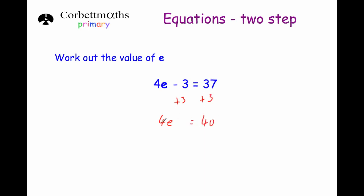Next we've got 4 times e. We don't want to times by 4, so we do the inverse and divide both sides of the equation by 4. 4e divided by 4 is just e, and 40 divided by 4 is equal to 10. So our answer is e equals 10. We can test it: 4 times 10 is 40, minus 3 is 37. ✓